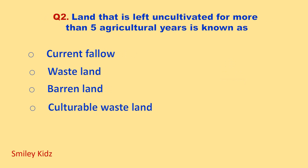Land that is left uncultivated for more than 5 agricultural years is known as? Your options are: current fallow, wasteland, barren land, culturable wasteland. Your time starts now.